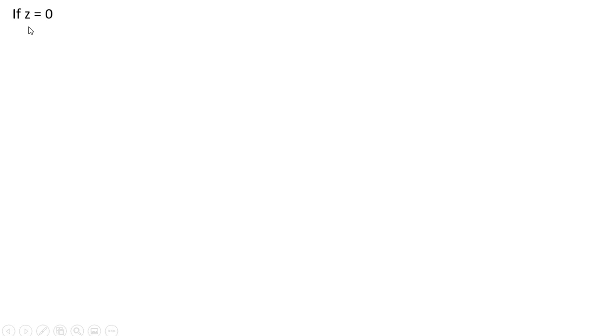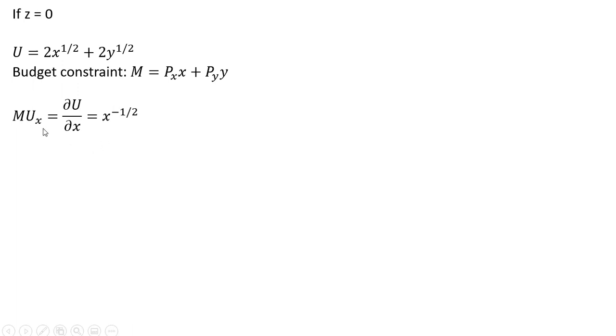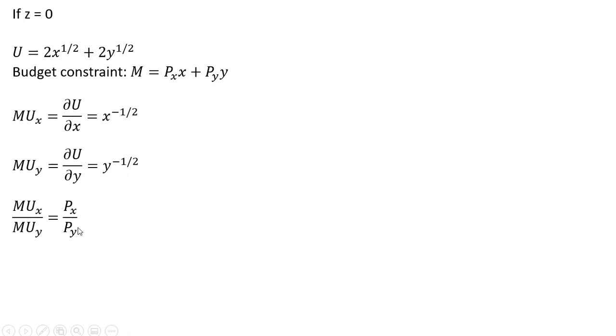If z equals zero and the consumer doesn't buy any units of good z, the utility function will look like this, and the budget constraint will ignore the price of good z times units of good z. We maximize utility without good z, finding the marginal utility of good x and marginal utility of good y, and set up the utility-maximizing condition as the marginal rate of substitution equals the ratio of prices.